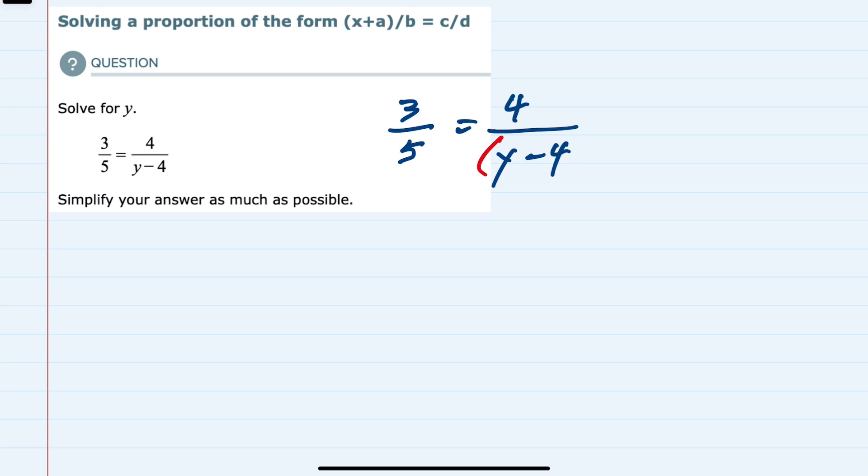So on the right-hand side, I would need to multiply both the top and the bottom by 5 to have a denominator of y minus 4 times 5. And then on the left-hand side, I would need to multiply the top and the bottom by y minus 4. And then it would also have that denominator of y minus 4 times 5.